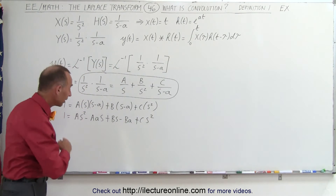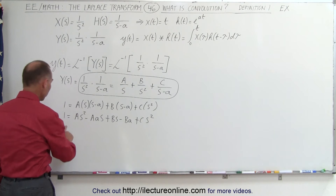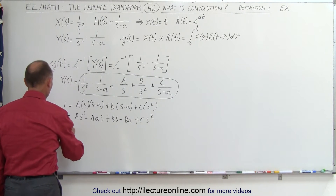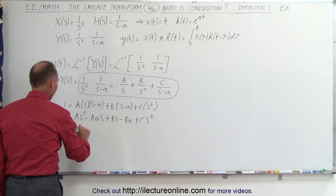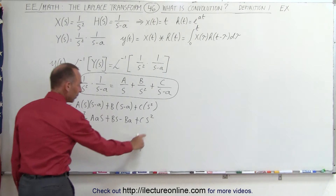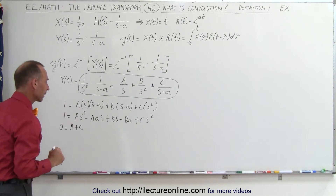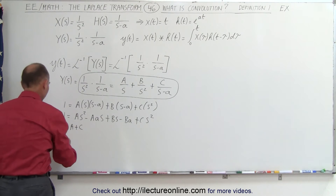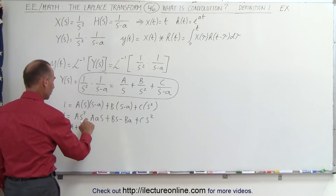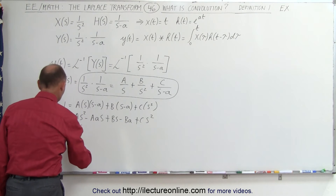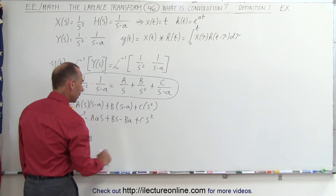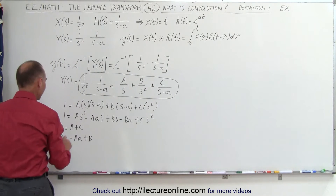Now we can compare the left side to the right side. There are no s² terms on the left side, which means 0 equals A plus C, because we have an A·s² term and a C·s² term on the right. Next, there is no s term on the left side, so 0 is equal to the s terms on the right: minus A·a plus B.